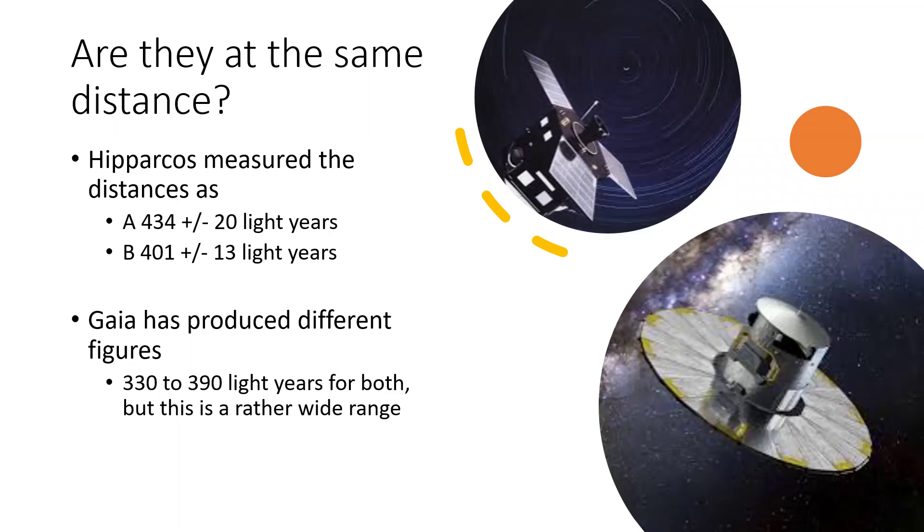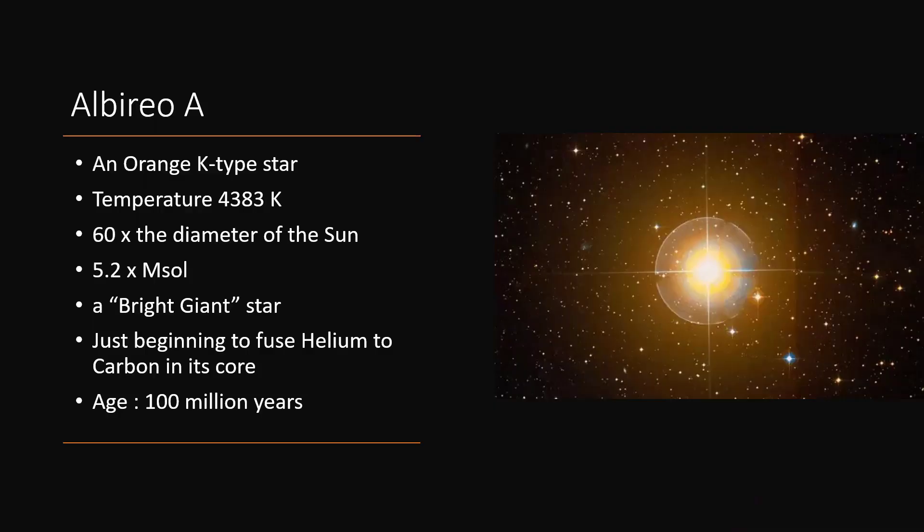So what do we know about the individual stars? Well, Albireo A, the orange star, is a K-type, temperature 4,383 degrees Kelvin, but it's 60 times the diameter of the Sun. So this is a giant star, and in fact, it's over five times the Sun's mass. This means that it's a bright giant.